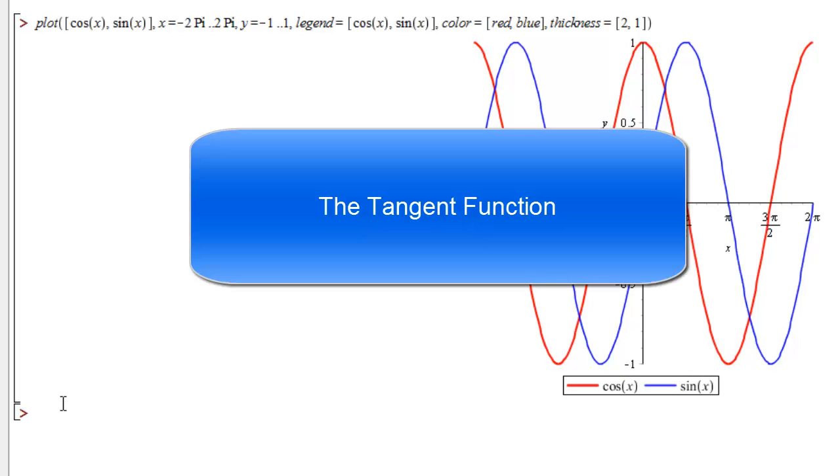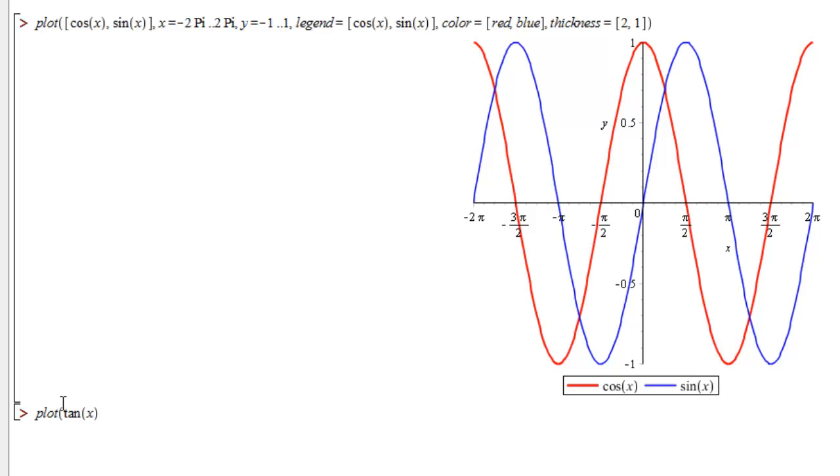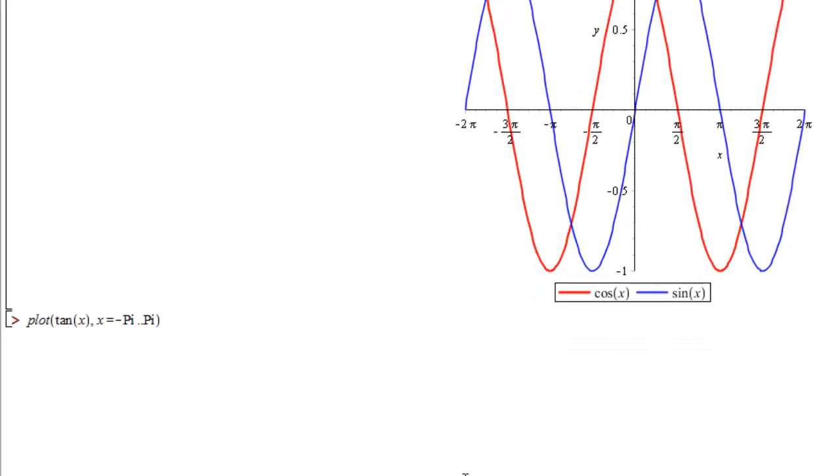So now let's take a look at the graph of tangent x. Tangent is also periodic. It has a period of π instead of 2π. So we're going to graph two periods of the tangent function, which is predefined as the function tan of x. And we're going to go x from negative π to π. So that's two periods of tangent. And for the moment, we're not going to specify y. And let's see what happens.